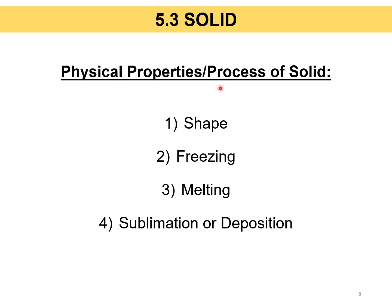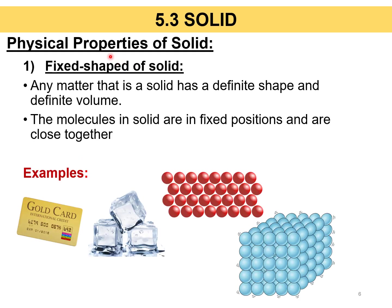I will explain the physical properties of solid involving shape, which is a physical property of solid, and then the processes of solid involving freezing, melting, sublimation, and deposition. The basic physical property of solid is that it has a fixed shape — a definite shape and also a definite volume. The solid molecules are arranged in a fixed position and are very closely packed together.